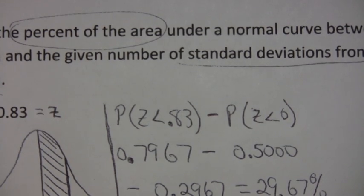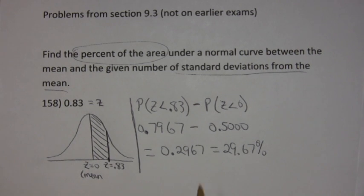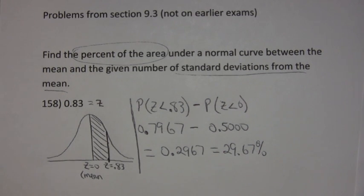So, oh, I forgot to turn back out. Excuse me. So, as it turns out, about 29.67% of the area is between those two values. Simple enough.